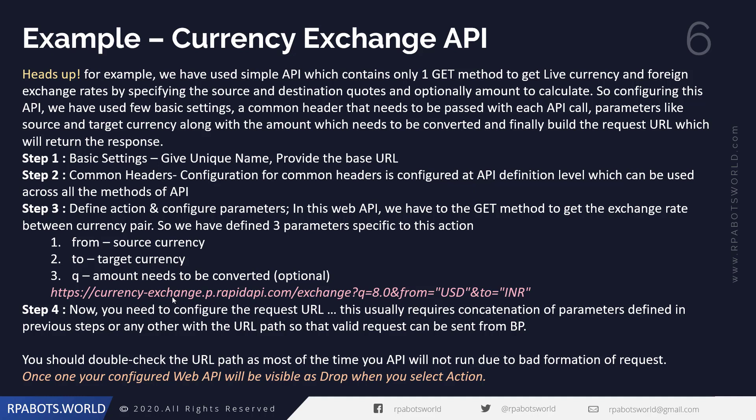One important thing to know: once this web API has been configured in Blue Prism, you should be able to use it as a business object in a business object or in a process. It's a really cool feature — once configured, a web API can be used across multiple processes using their own authorizations and authentication tokens, providing better reusability of the code. So let's jump into the Blue Prism tool, configure this API, and see how we can use this exchange API to build our own process providing a live exchange rate.